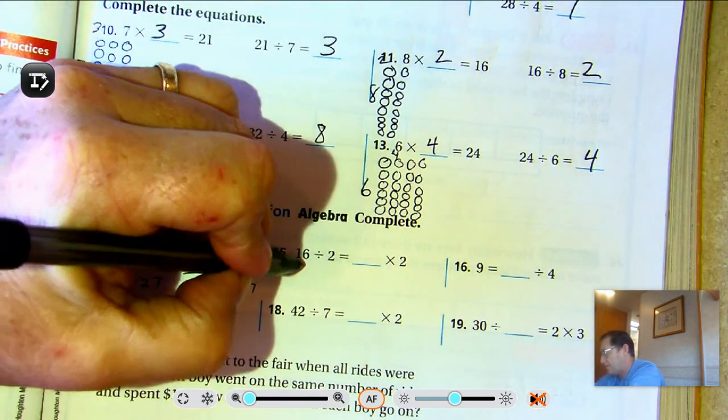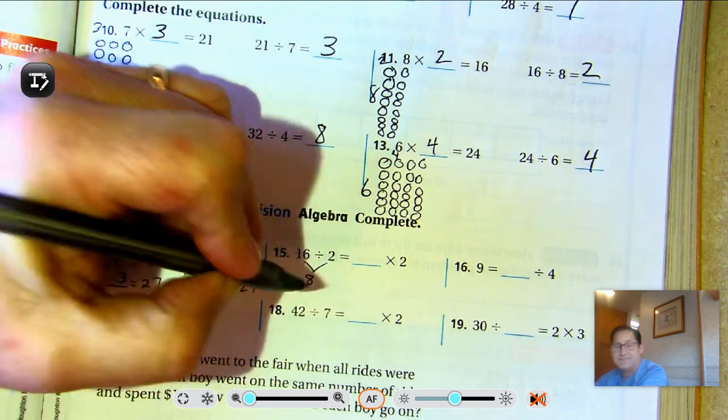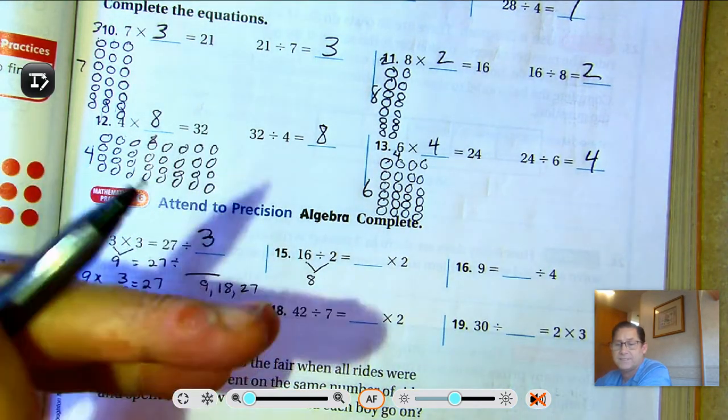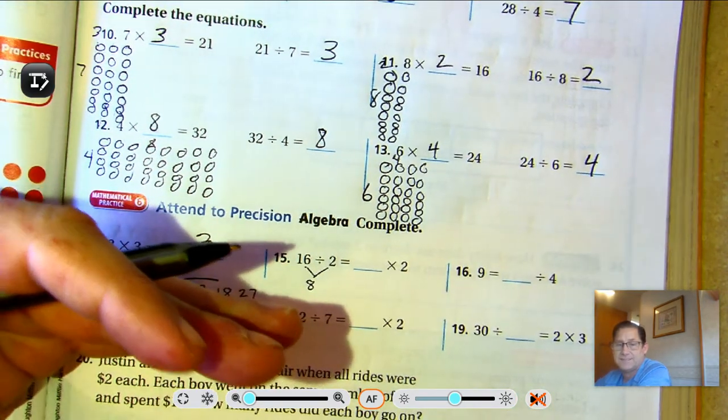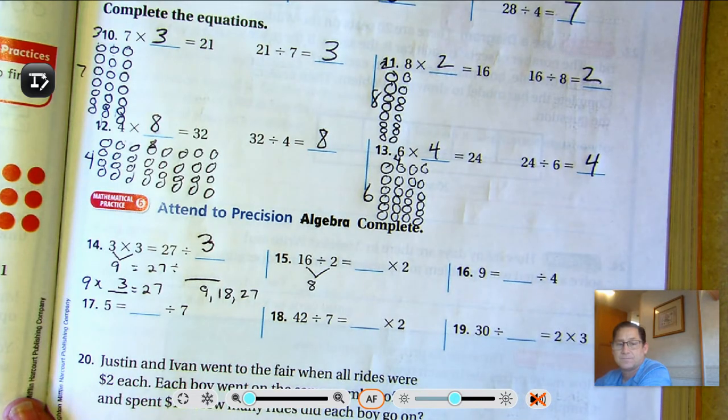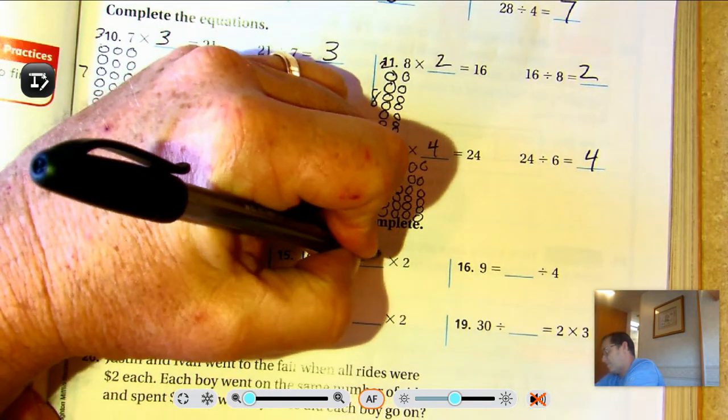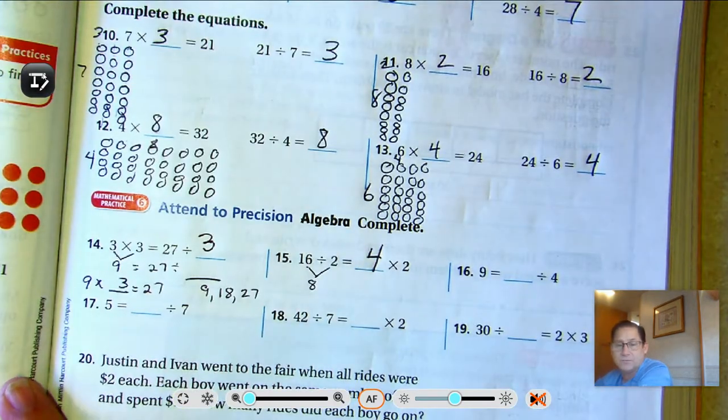16 divided by 2 is 8. Counting by twos: 2, 4, 6, 8, 10, 12, 14, 16. So what times 2 equals 8? 4. 4 times 2 equals 8.